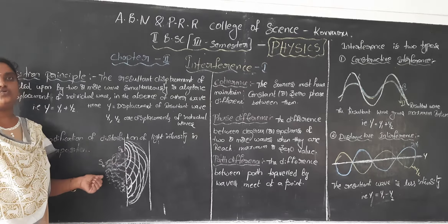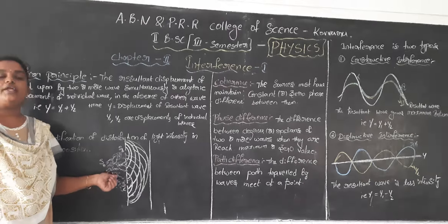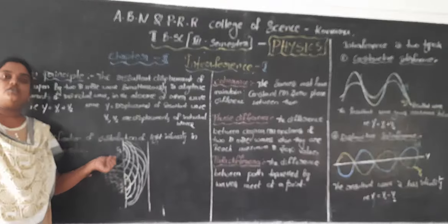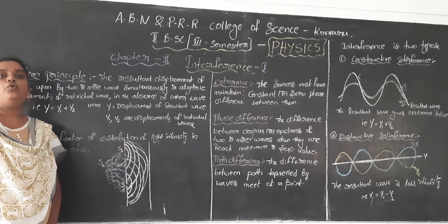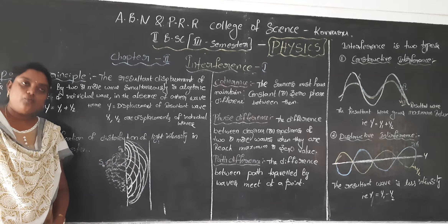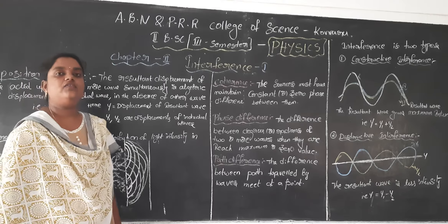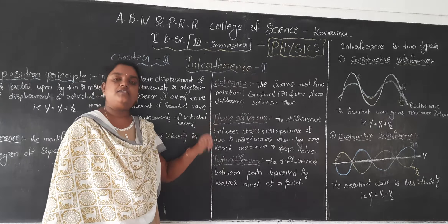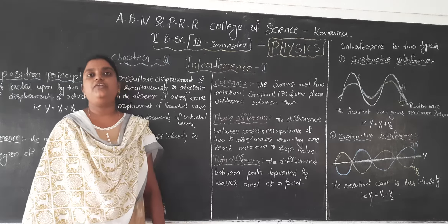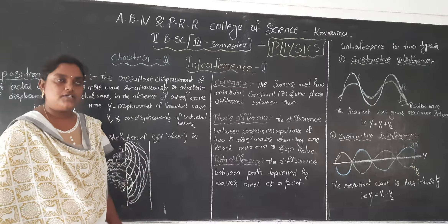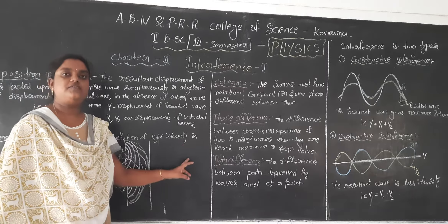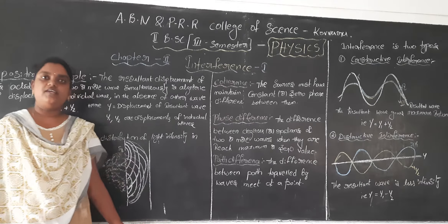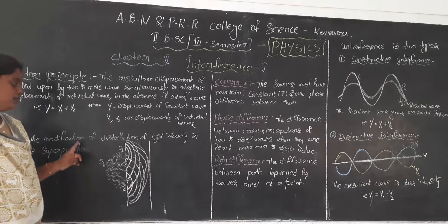For an interference pattern to form, the sources must be coherent sources. Coherent sources means the source must be monochromatic — that is, it must have a single wavelength — and it must maintain a constant phase reference, meaning either zero or constant phase difference.